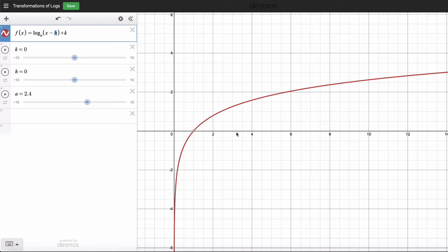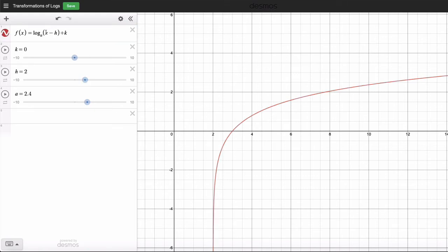It's going to read log base a of x minus two. Make this positive two, and it just shifted to the right two units. If I want to shift it to the left two units, the anchor point's going to end up being at (-1,0). If I make h equal to negative two, it goes through right this point, (-1,0).